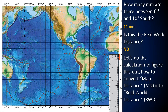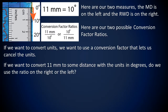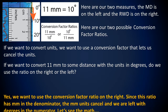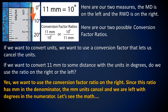Let's do the calculation to figure out how to convert map distance into real world distance. Here are our two measures: map distance on the left and real world distance on the right. From this, we find two possible conversion factors: 11 millimeters per 10 degrees, or 10 degrees per 11 millimeters. If we want to convert units, we use the conversion factor that lets us cancel the units. If we want to convert 11 millimeters to degrees, we use the ratio on the right — with millimeters in the denominator, the units cancel and we are left with degrees in the numerator.